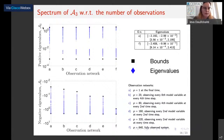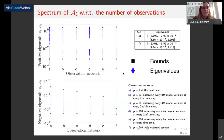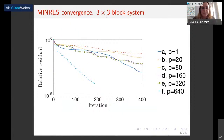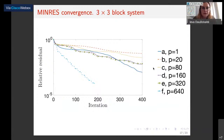Looking at the eigenvalues of the three-by-three block system, we see that the smallest positive eigenvalues, as expected, move towards zero when we increase the number of observations, and the other extreme eigenvalues move away from zero — again as expected. We also have black squares denoting the bounds, and we can see that the bounds are quite tight. When we solve the system for all observation networks, in general the more observations we have, the better the convergence. The one-observation case is a bit different, and the convergence is quite slow, so it is apparent that we need preconditioning.